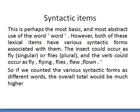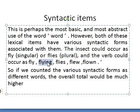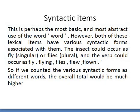Syntactic words are perhaps the most basic and abstract use of the word 'word.' Both lexical items have various syntactic forms associated with them. The noun 'fly' could occur as 'fly' singular or 'flies' plural. The verb could occur as 'fly,' 'flying,' 'flies,' 'flew,' or 'flown' — the five forms of every English verb. If we counted the various syntactic forms as different words, the overall number of word types would be much higher.